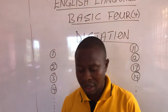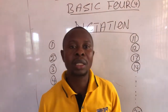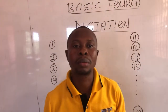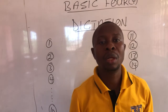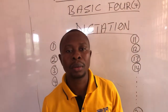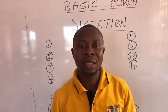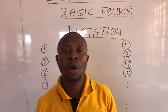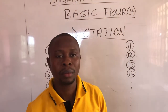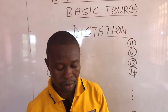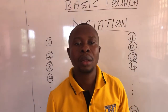Number 17, straight. Straight. Number 18, generous. Generous. Number 19, dishonest. Dishonest. And number 20, the last number, is listener. Listener.